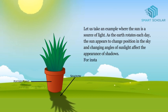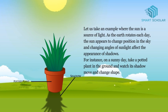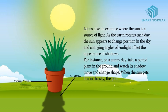For instance, on a sunny day, take a potted plant in the ground and watch its shadow move and change shape. When the sun gets low in the sky, the potted plant's shadow gets longer.